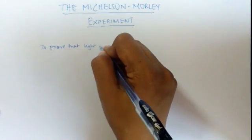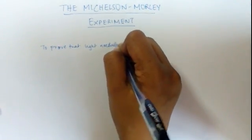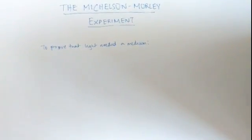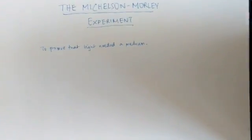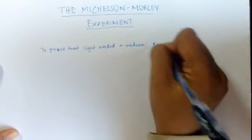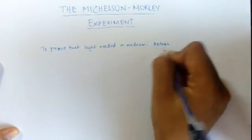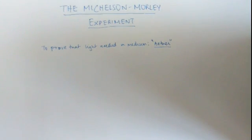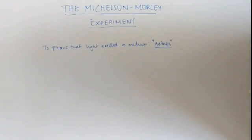The two scientists conducted an experiment to prove that there was a substance called ether. And by proving so, they would prove that light also had a medium to travel through.